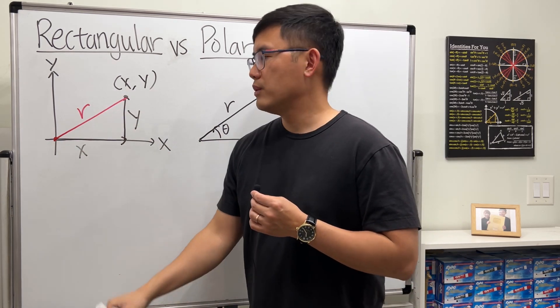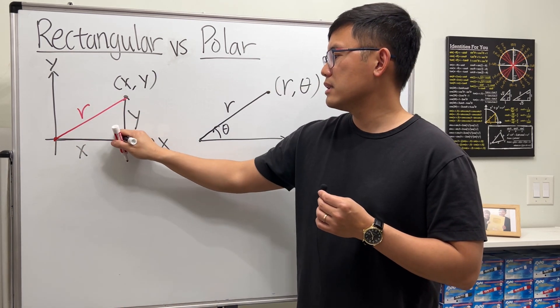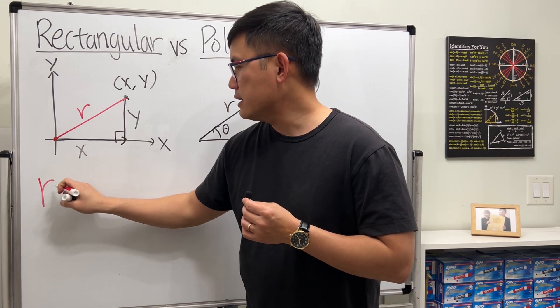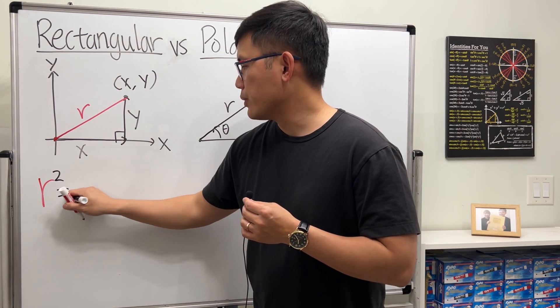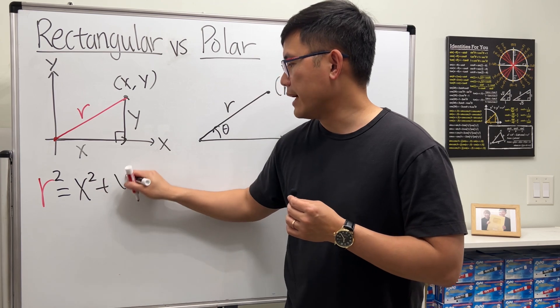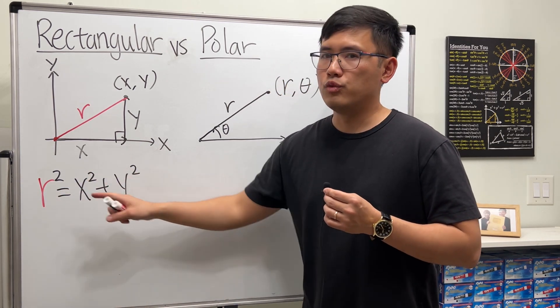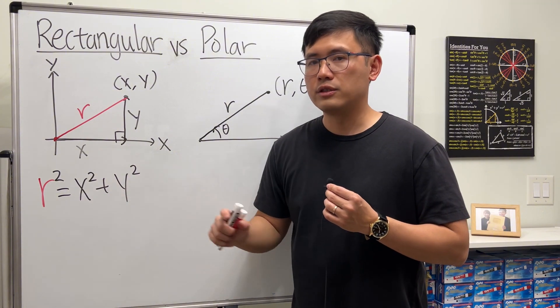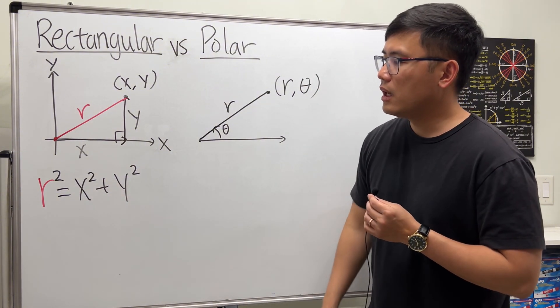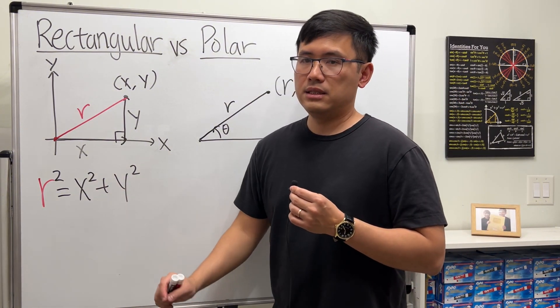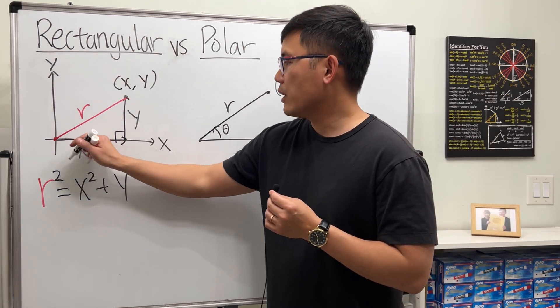Let's do r first. We have a right triangle, so we can say that r² must be equal to x² + y². If we take the square root on both sides, remember to put a plus or minus, so r could be negative. I'm just going to leave it like this.